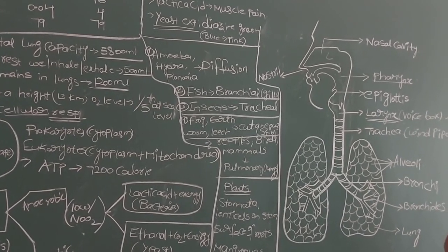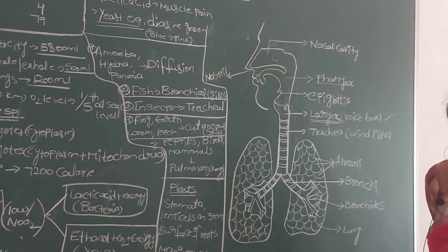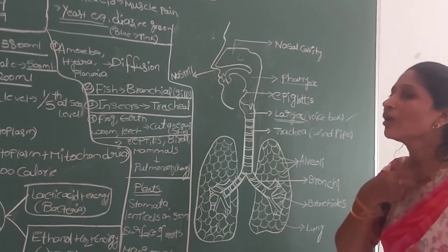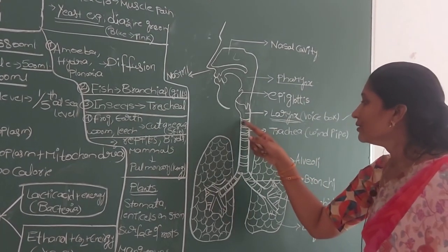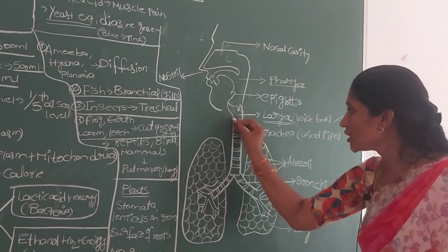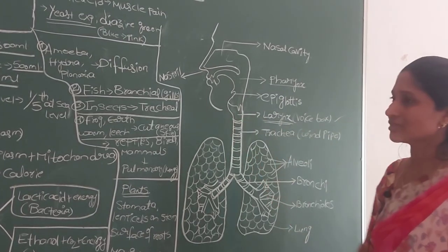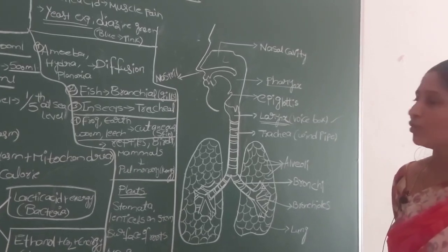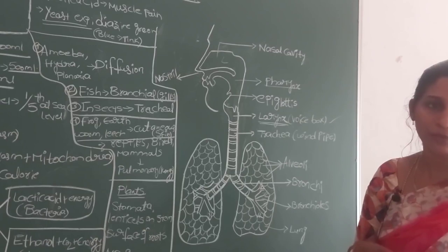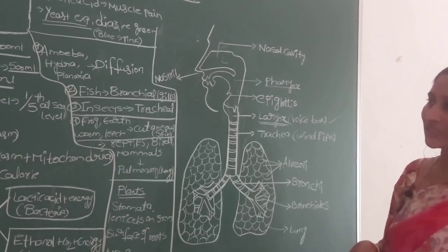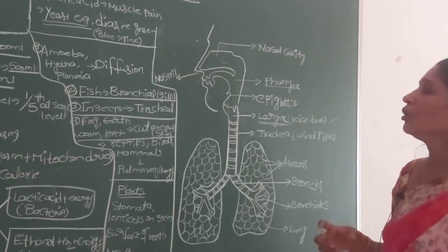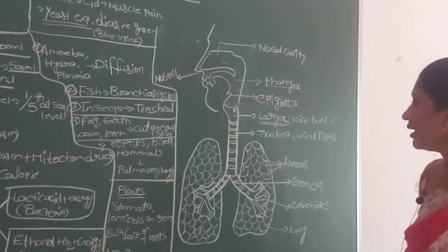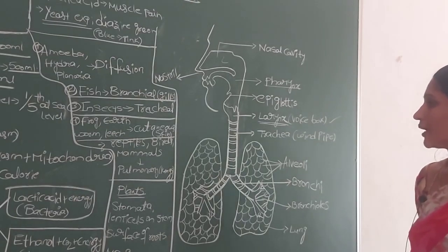After the larynx, if you touch your neck you can feel a small tube-like structure — that is the trachea or windpipe. The trachea runs along the neck and is made up of small C-shaped cartilage rings throughout its length. These rings help protect the windpipe from collapsing when air passes through.